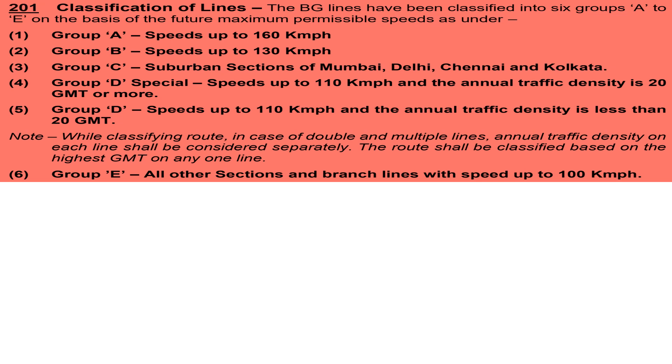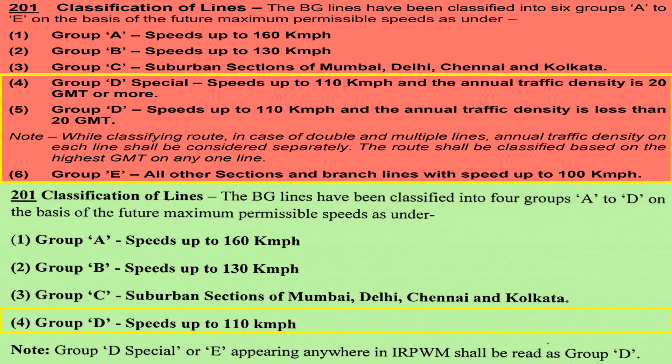On implementation of CS 6, groups D-Special, D and E have been merged into a single group D. The only condition described to classify routes under group D is that all routes have a speed up to 110 kmph. It is also instructed to read D-Special and E as group D wherever they appear in the IRPWM.